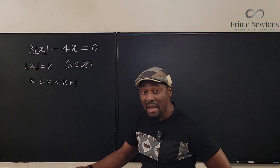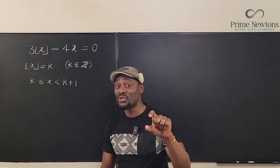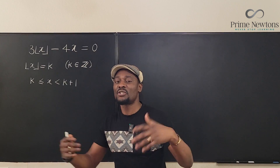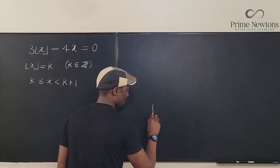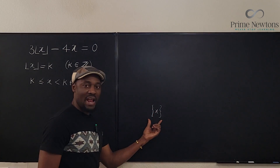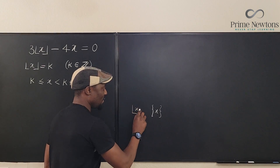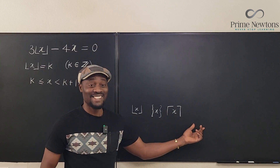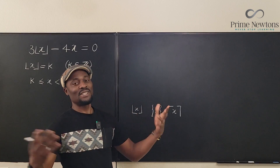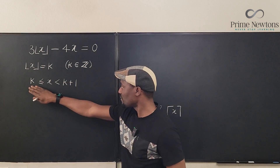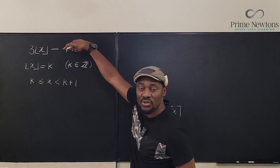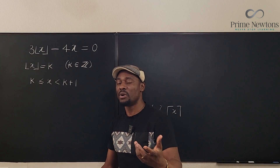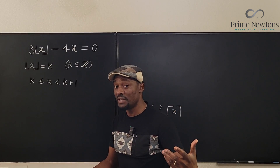Let's use what we know to get what we want. Remember, every number is defined as an integer plus a fraction. Sometimes there is no fraction part, sometimes there is. There's a symbol for the fractional part of x, and also symbols for the floor of x and the ceiling of x — all three may be combined in a future video.